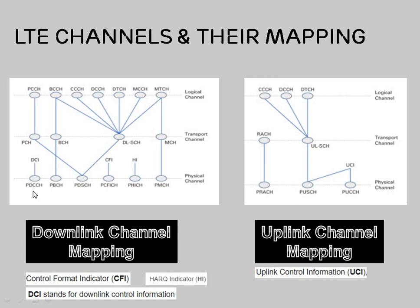In the downlink channel mapping, most logical channels are mapped to the Downlink Shared Channel (DL-SCH), which is then mapped to the Physical Downlink Shared Channel (PDSCH). This is the most important channel — all channels usually send their data through it. Broadcast information is sent from BCCH to PBCH.